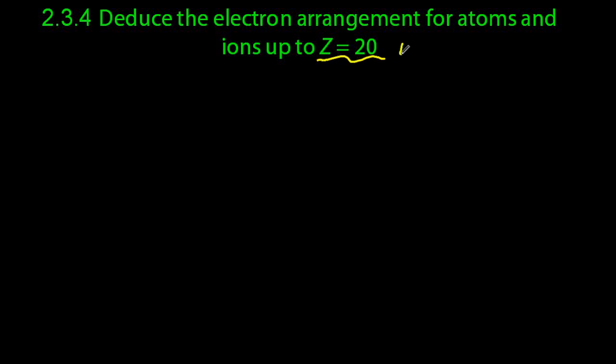So what does Z equals 20 mean? It means that we're going to go up to 20 electrons, atomic number 20, on the Periodic table, which is calcium. Also 20 protons.